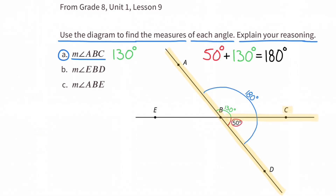We can double check that by adding: 50 degrees plus 130 degrees equals 180 degrees.